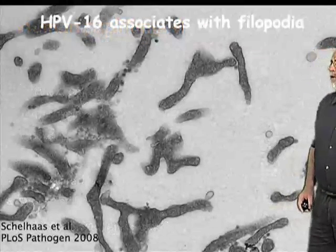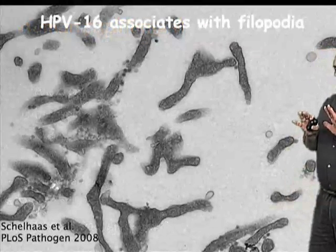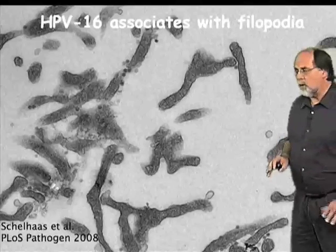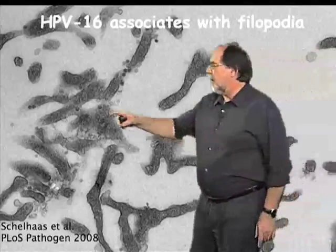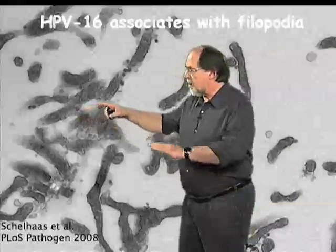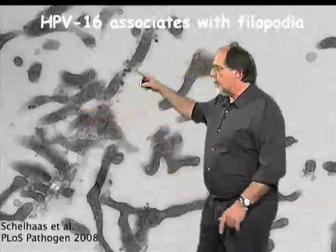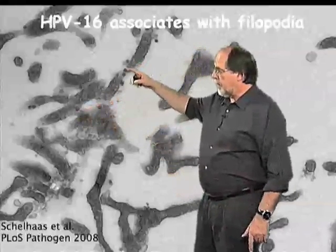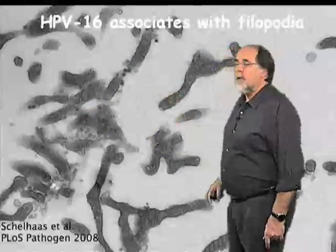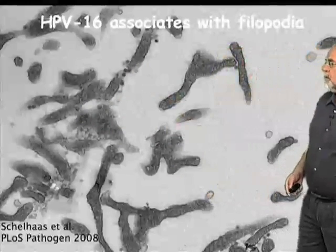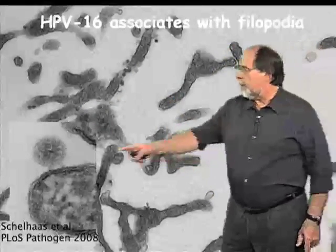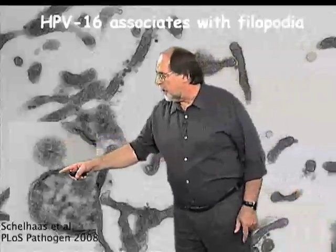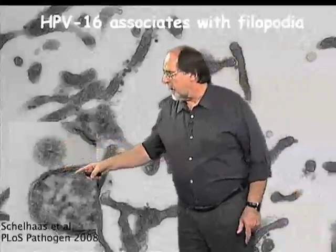Electron microscopy here shows that the virus on cell surfaces likes to bind to filopodia. These are the actin-containing extensions. You can see them in section here and the viral particles are attached to them. Many viruses bind to filopodia, as you'll see later. Here is just an enlargement of a particle and the plasma membrane underneath it.